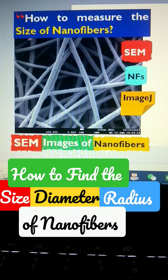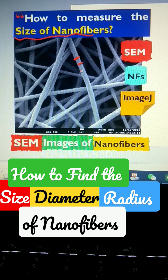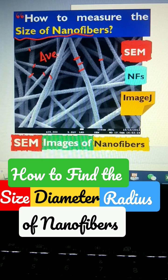How to measure the size of nanofibers? Size basically means the diameter or the radius. We can also know that the fibers are not uniformly distributed, so some fibers are thin and some fibers are thick. So we have to take at least 10 measurements and divide by 10 and we will get the average.